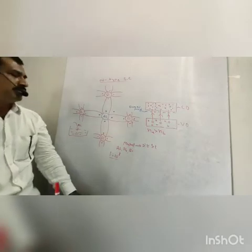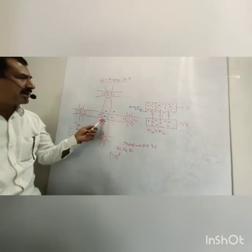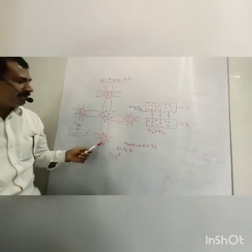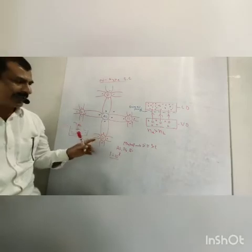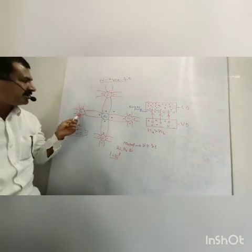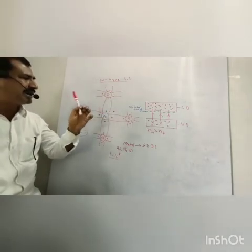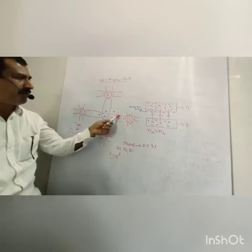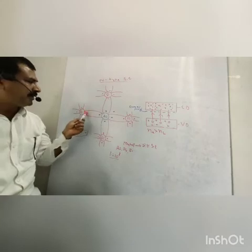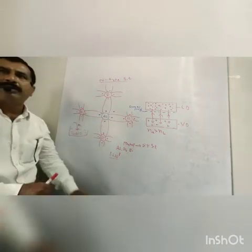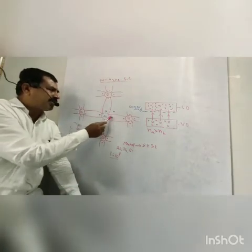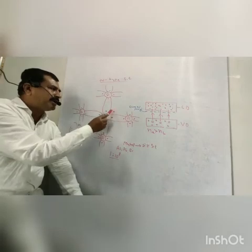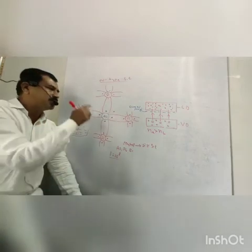This shows a pentavalent impurity atom of arsenic alongside an atom of silicon. This is the covalent bond formed by a pair of electrons. Out of 5 valence electrons, 4 valence electrons of the arsenic atom are involved in the bonding process. The 5th electron is therefore free and is loosely bonded to the nucleus.